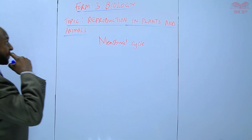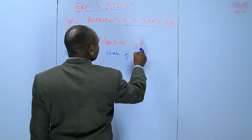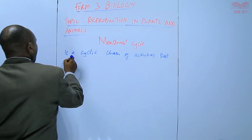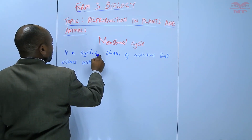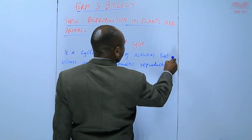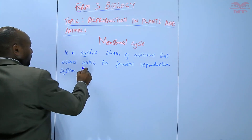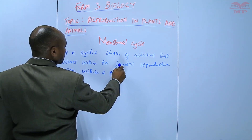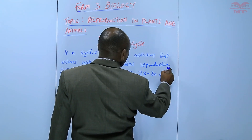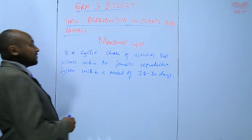The menstrual cycle is a cyclic chain of activities that occurs within the female's reproductive system, within a period of 28 to about 30 days.